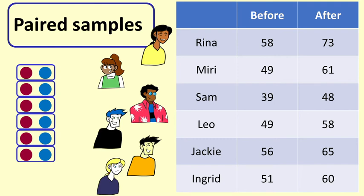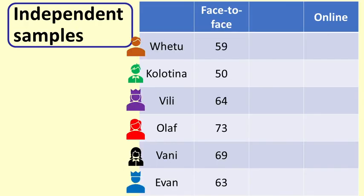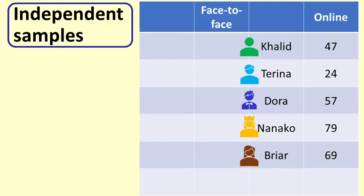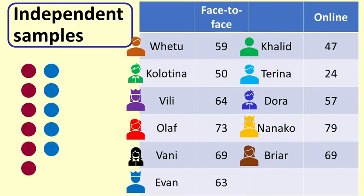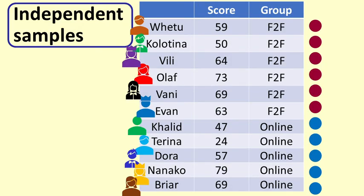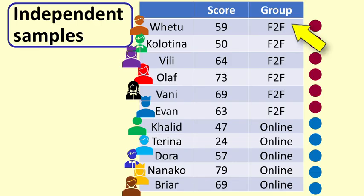In an actual study we would have more than six people. Another approach compares the mean scores in a statistics test between people who have had face-to-face tutoring and those who have learned through an online course. In this instance, there are two samples, one for each group of people. The two samples are independent — there is no relationship between the people in one group and the people in another group. When you enter the data for analysis, each line will be a person, with one variable giving the score and one variable for group membership.